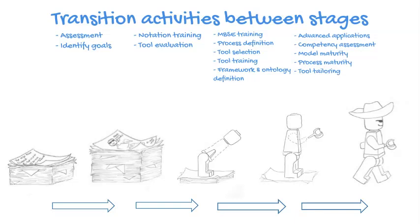One reason this is important is that very often when people start to deploy MBSE, they'll be at stage 1 (document-based) and then say they want to do variant modelling. Unfortunately, variant modelling is a stage 5 type application — you need to walk before you can run. You need to go through this evolution of stages before you can consider complex applications. The same applies to profiling tools, which can't begin until at least stage 4 moving into stage 5.